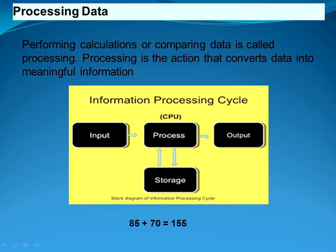For example, if you want to add two numbers, 85 and 70, both numbers act as input for the computer, the addition function (plus) is basically the processing action, and the output — which is 155 — is produced after processing by the CPU.